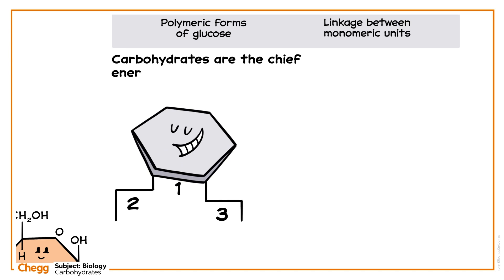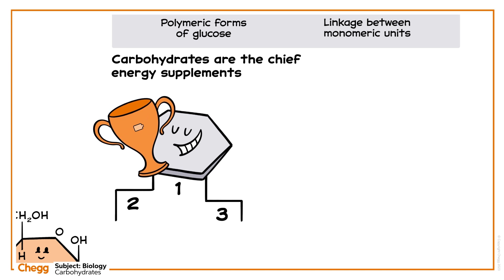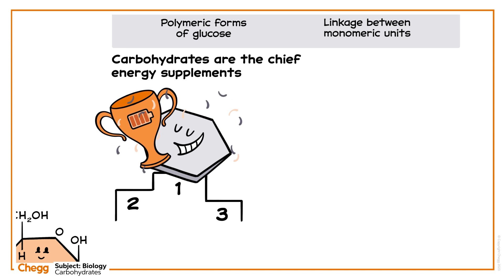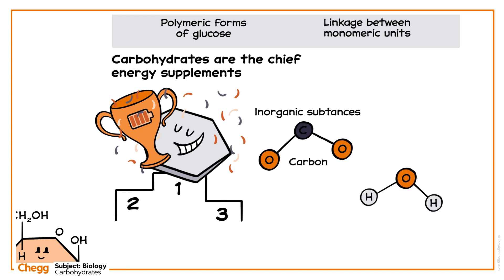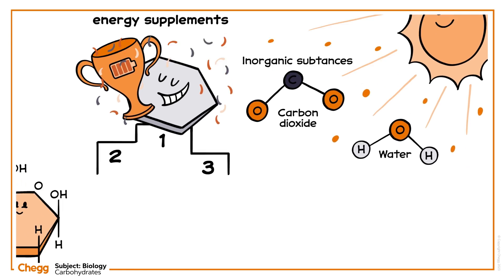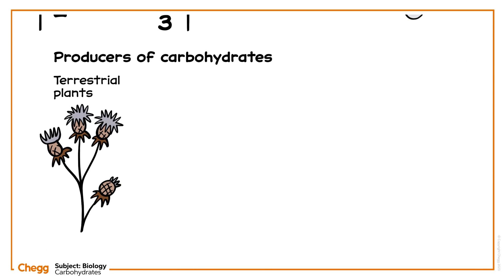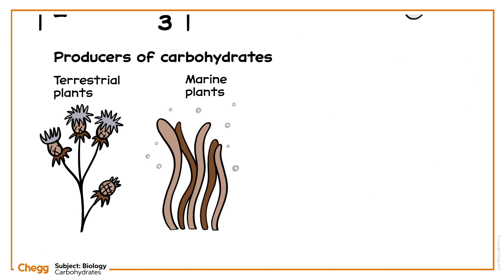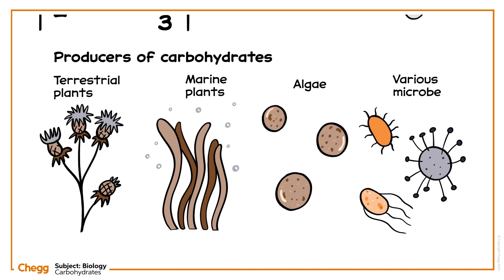Carbohydrates are the chief energy supplements of living systems, and these molecules are initially generated by the producers of an ecosystem. Inorganic substances, carbon dioxide and water are employed to produce carbohydrates in the presence of photons emitted by the sun. The producers include terrestrial plants, marine plants, algae, and various microbes.